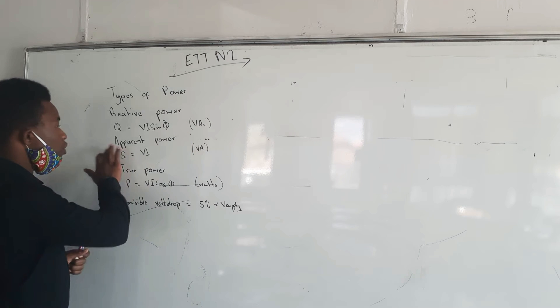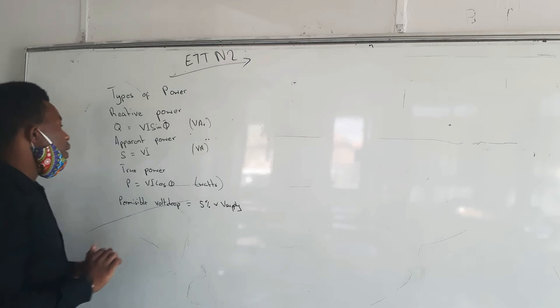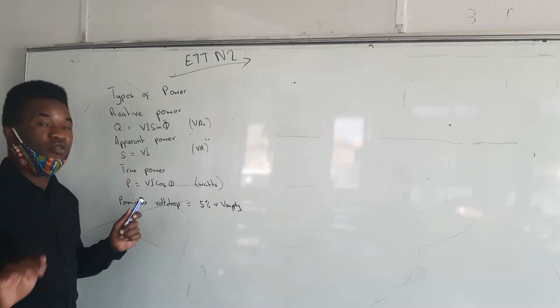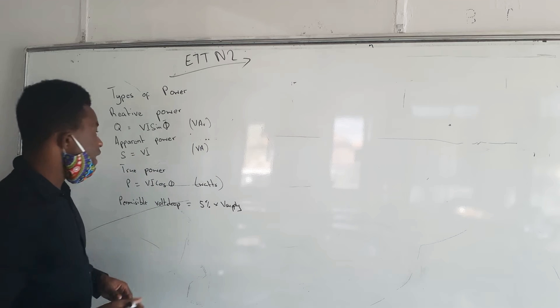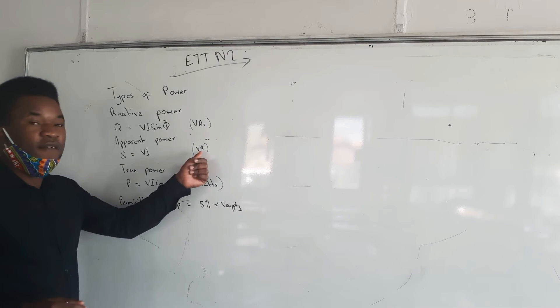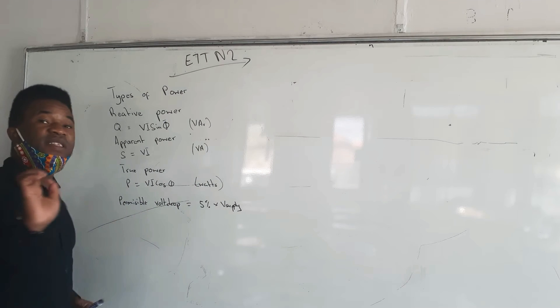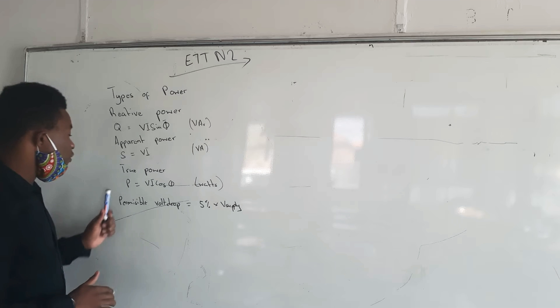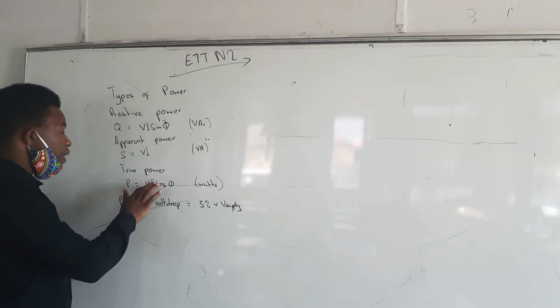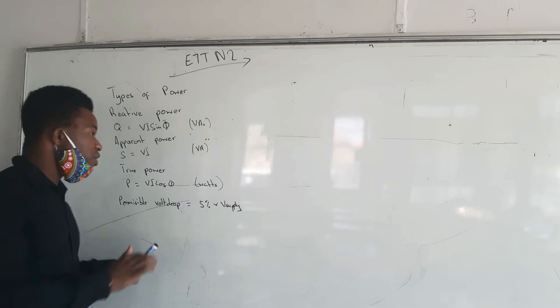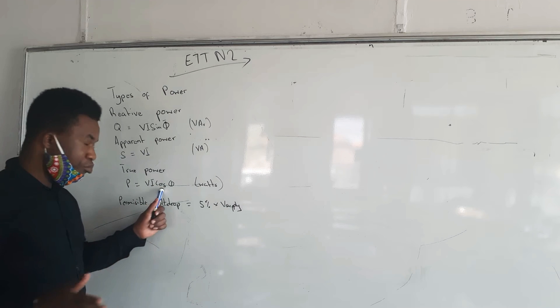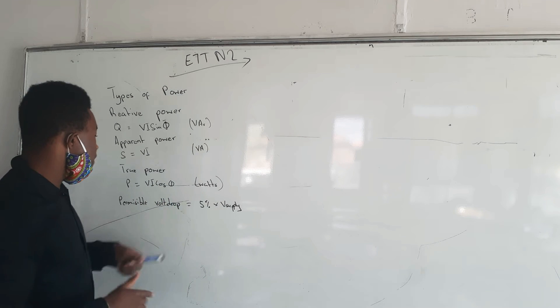We also have apparent power, which is S. The formula to calculate apparent power is voltage multiplied by current, with the unit VA. Then we have true power, which is P equals V times I multiplied by cos theta. Your cos theta is your power factor.